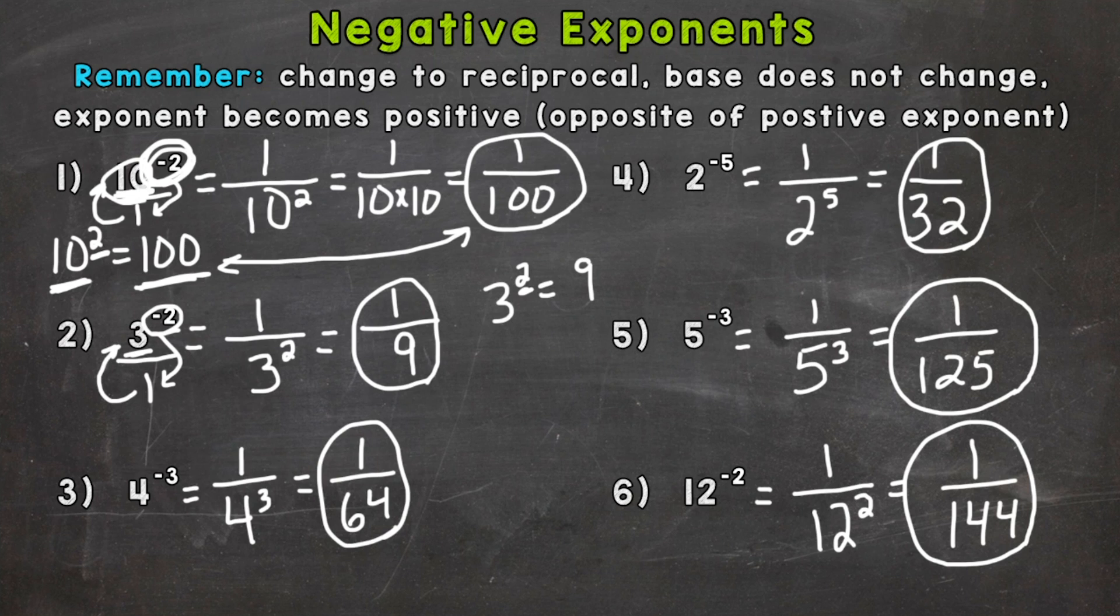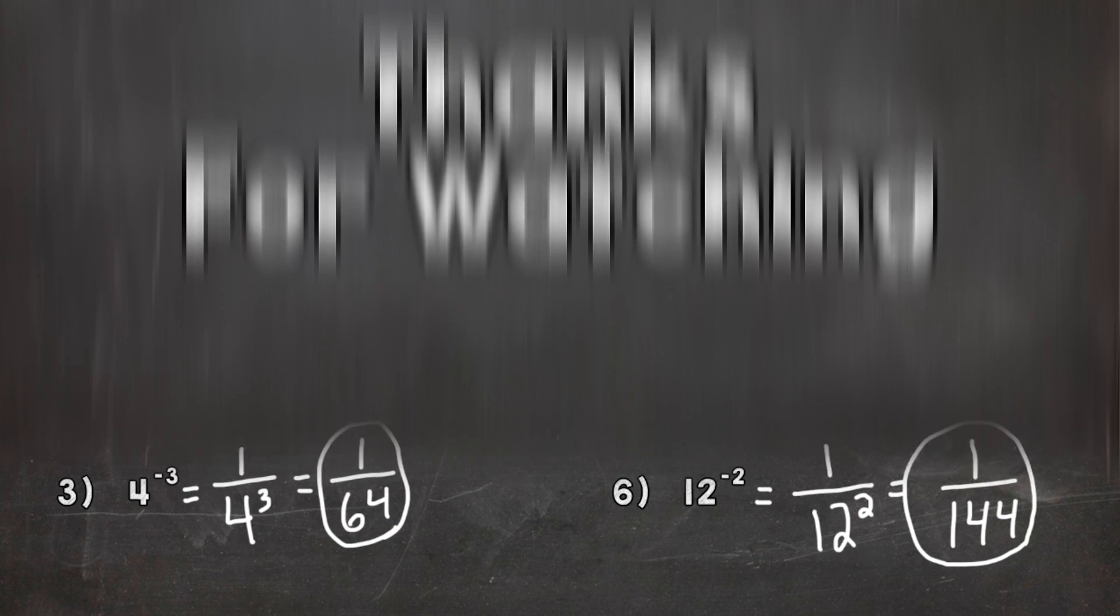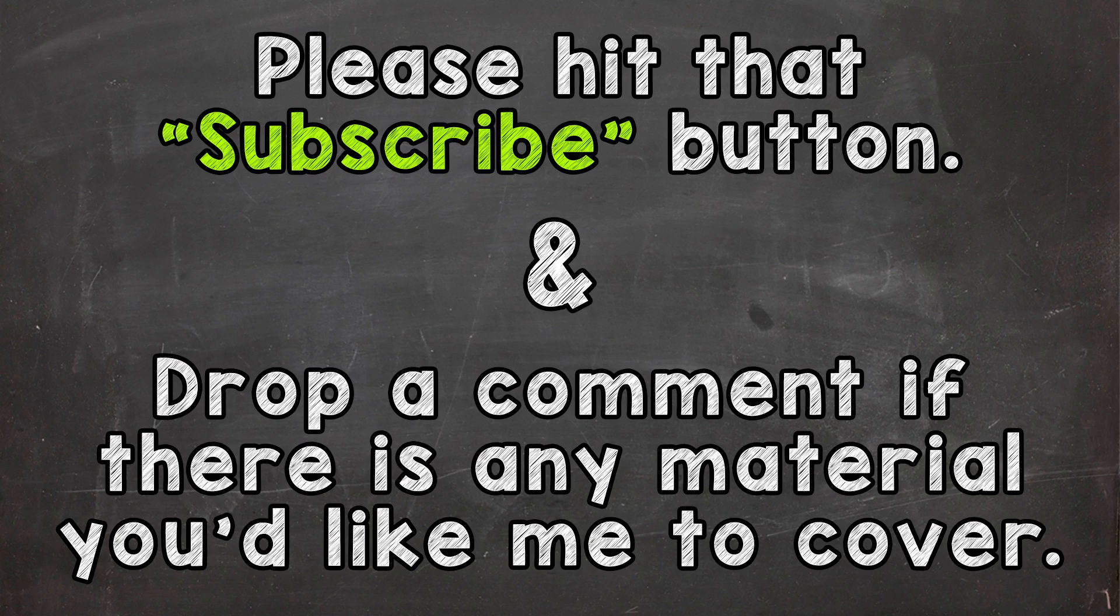There you have it. That's how you solve negative exponents. We change to the reciprocal, the base does not change, and we get a positive exponent once it's in the denominator. Thanks so much for watching. Hopefully that helped. Until next time!